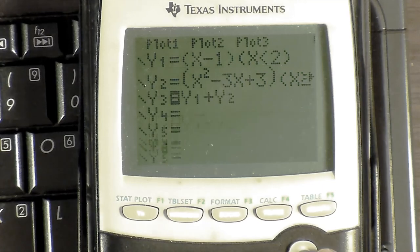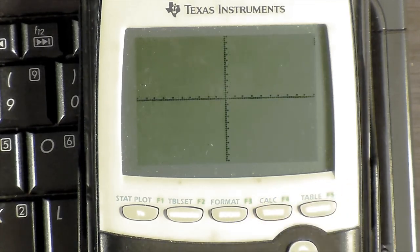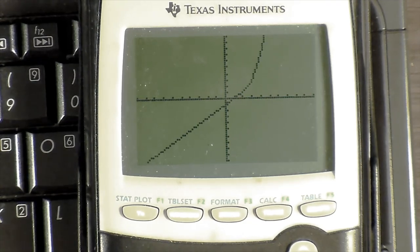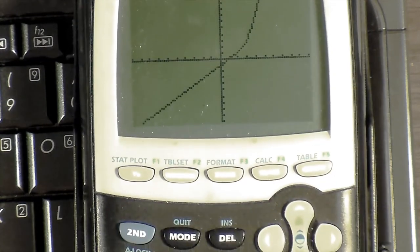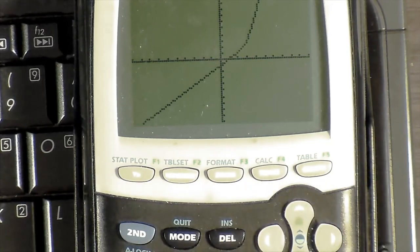We can deselect those two functions by moving the cursor over to the equal sign and pressing enter. Now we have the same graph as before, except now it's plotted as if it were a single function. And that's exactly what we want, because a piecewise function ultimately is just a single function with a single domain with multiple rules over parts of that domain.